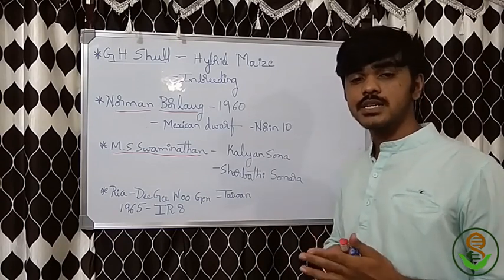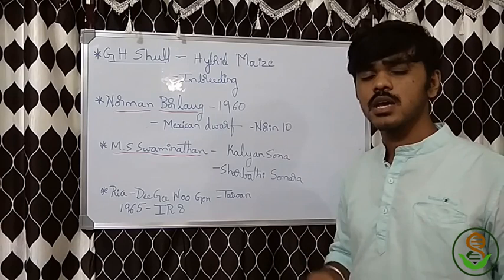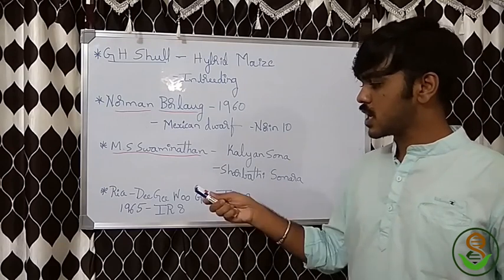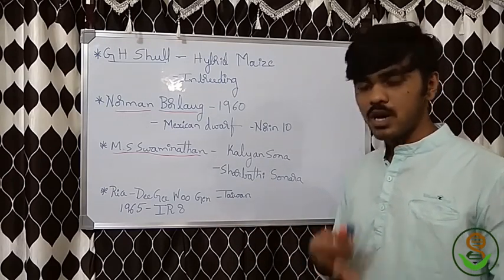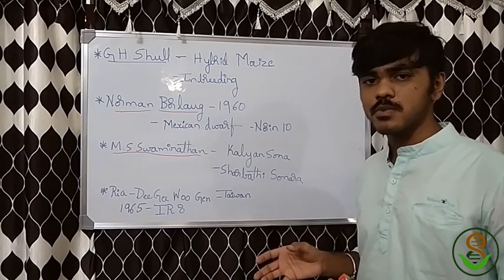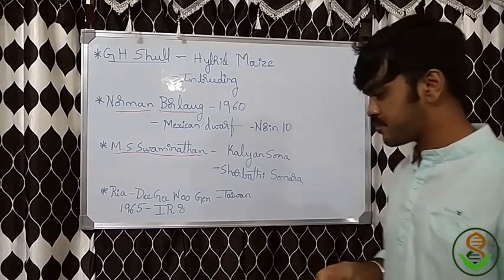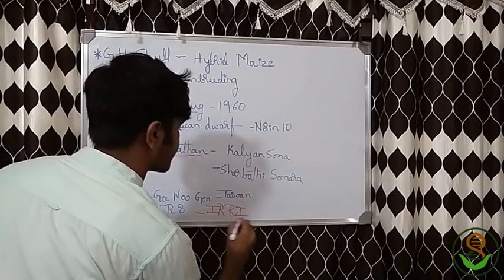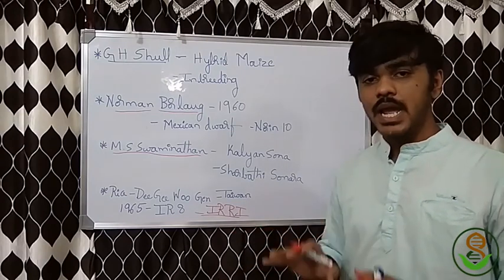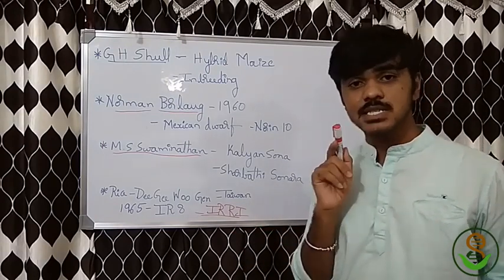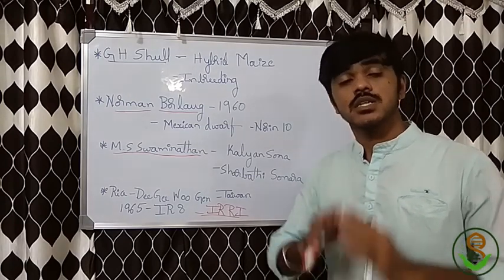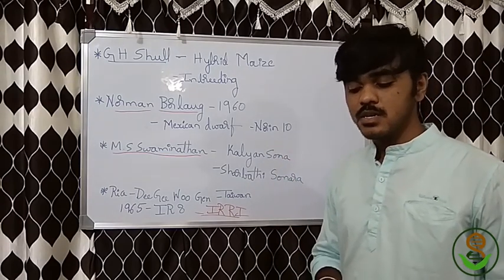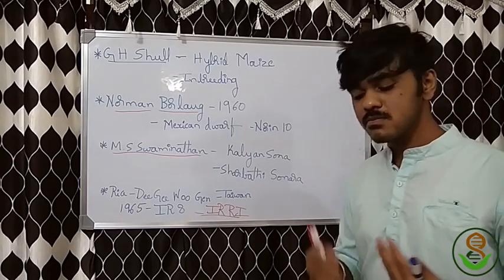MS Swaminathan released varieties like Kalyan Sona and Sharbati Sonara, among others. In rice, the cultivar Dee-geo-woo-gen was observed from Taiwanese farmers. IRRI took this and worked on it, and in 1965 they released the wonder rice IR8, which revolutionized rice cultivation.